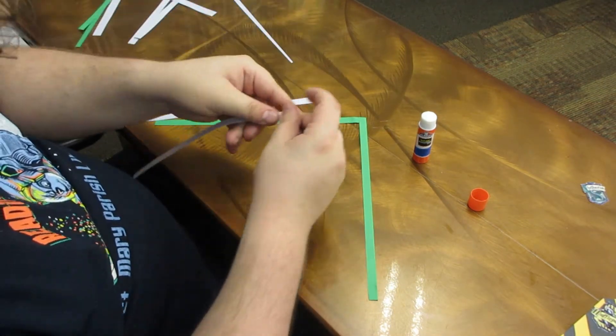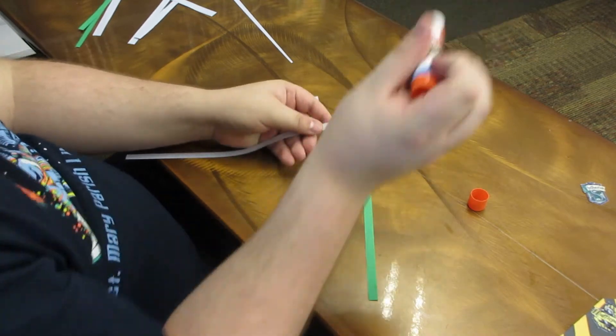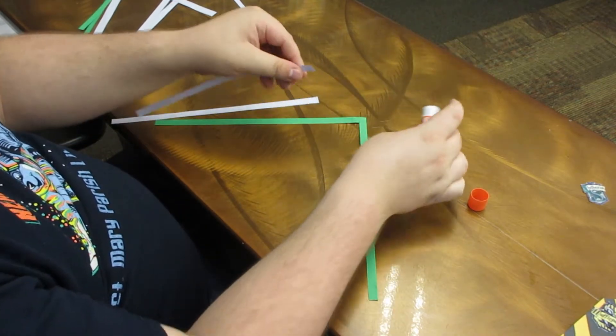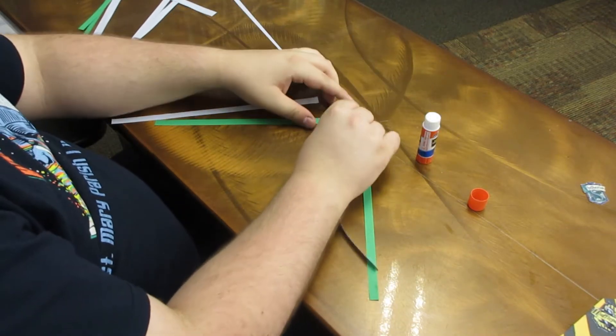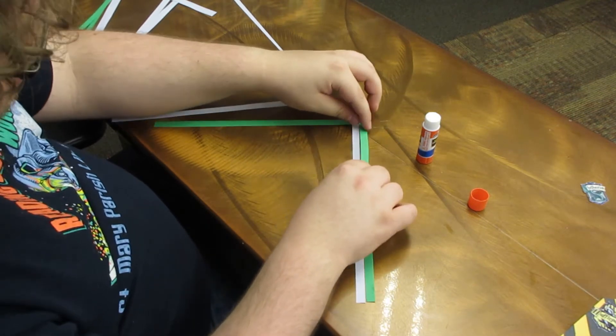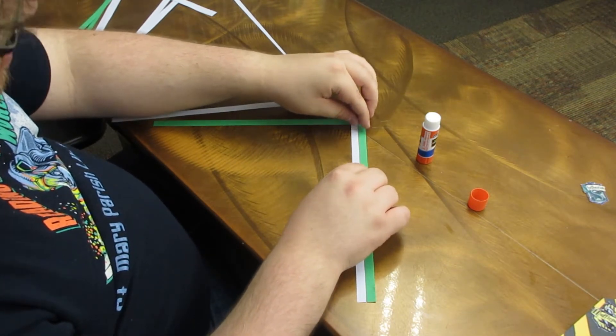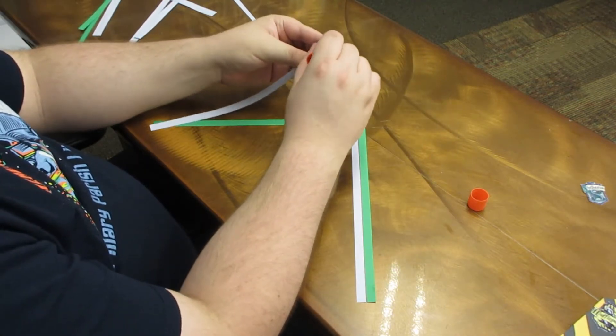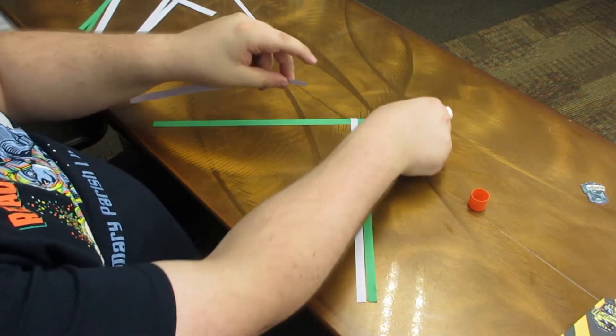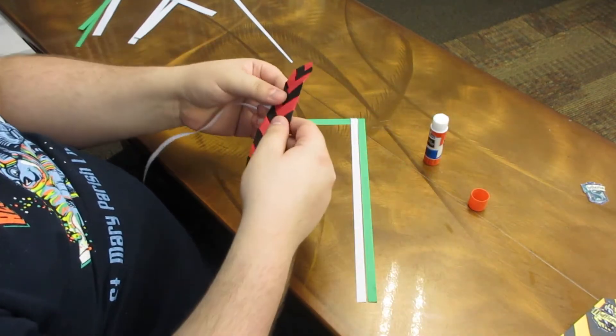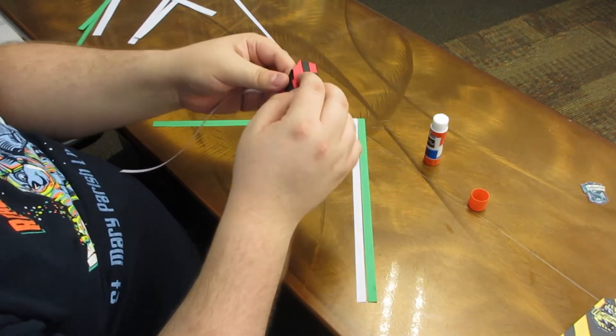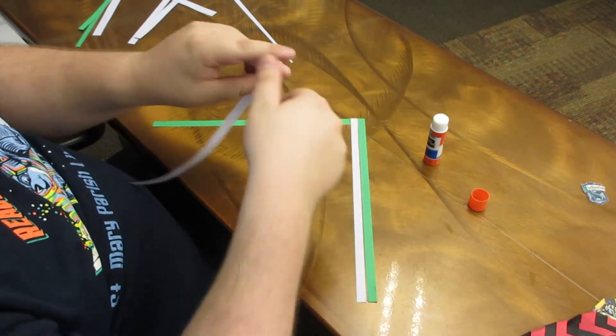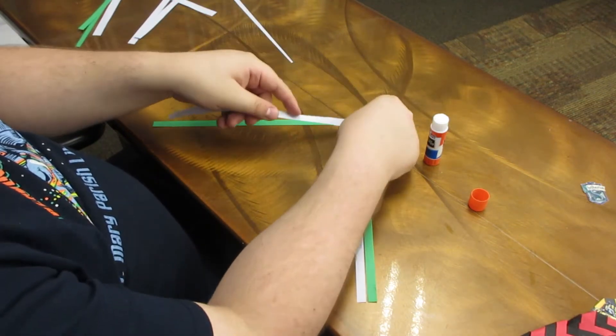So first you got to glue one in for the color. You can stick it into a V shape, just like so. And then you will start putting the other colors on in a V shape. You got to make sure they're touching enough or they won't become the bookmark part.